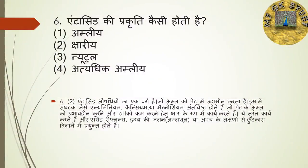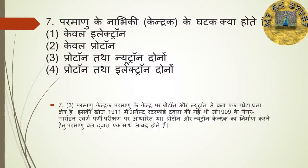Question number 6: Antacid की प्रकृति कैसी होती है? चार options हैं — अम्लीय, क्षारीय, न्यूट्रल, अत्यधिक अम्लीय। इसका right answer है क्षारीय। Antacid एक ऐसा वर्ग है जो एक अम्ल को पेट में उदासीन करता है। इसमें संघटक जैसे Aluminium, Calcium या Magnesium अंतर्विष्ट होते हैं जो पेट के अम्र को प्रवाहित करने और pH को कम करने हेतु कार्य करते हैं। यह एसिड रिफ्लक्स और हृदय की जलन में उपयोगी है।